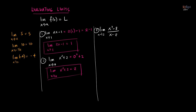Let's evaluate the limit of (x³ - 8)/(x - 2) as x approaches 2. If we try to substitute 2 right away for every x in the function, we'll get 2 cubed minus 8 divided by 2 minus 2, which gives us 0 over 0 — the indeterminate form. Whenever we get zero over zero, we have to do something with the function. We can't leave it as zero over zero. The numerator is factorable.